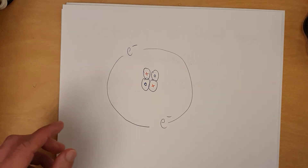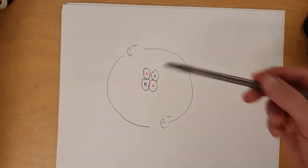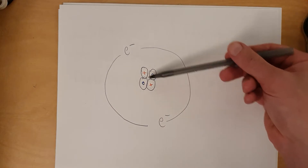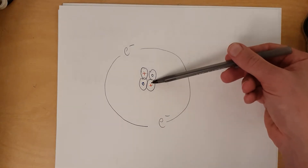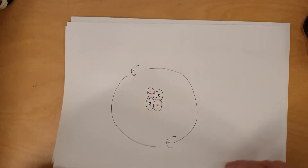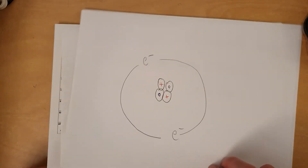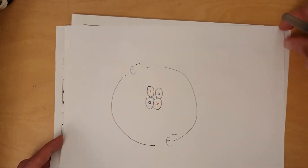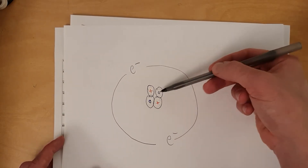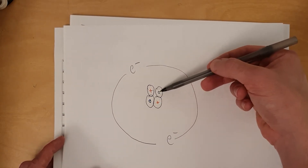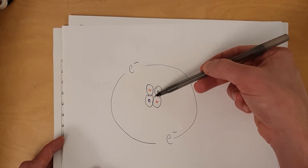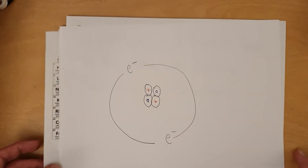This brings up an important thing to mention. What makes an atom what it is, is the protons. The number of protons determines the atom. Your periodic table will tell you the identity of any atom that has two protons, because the protons determine what element it is — the neutrons do not. So you can change the neutrons and it's still the same atom, but if you change the protons, it's no longer the same atom.